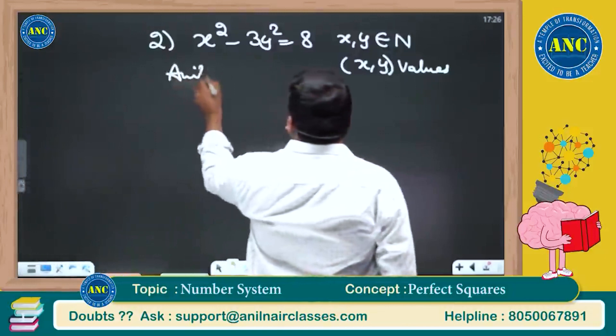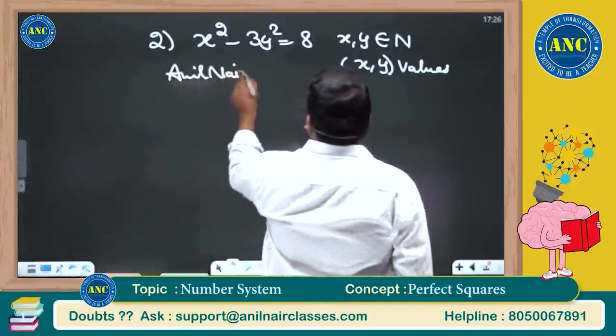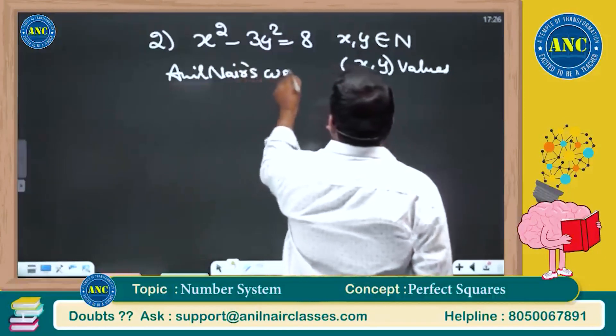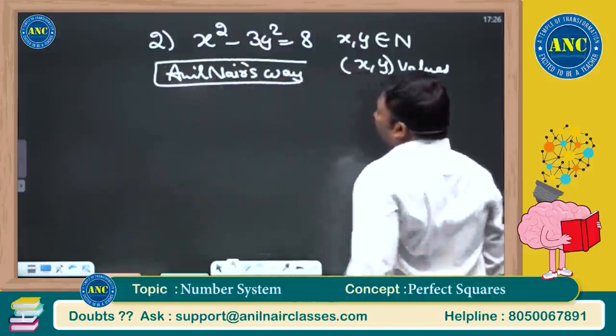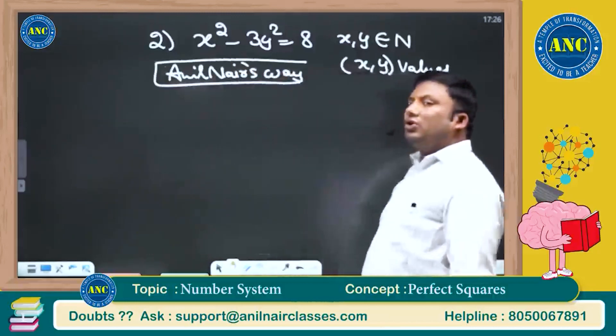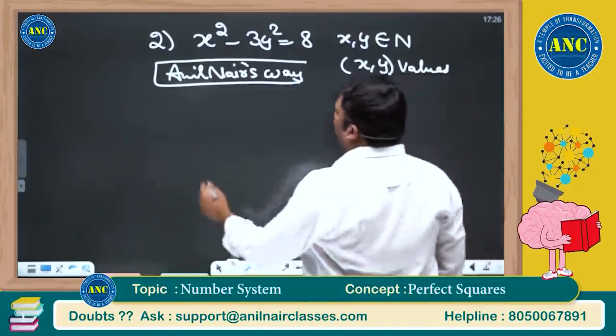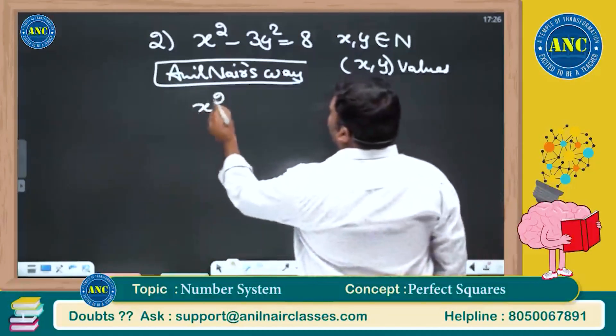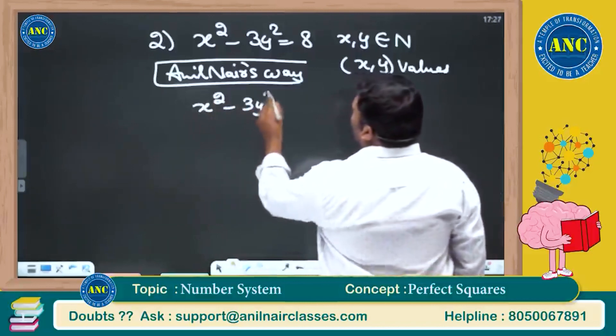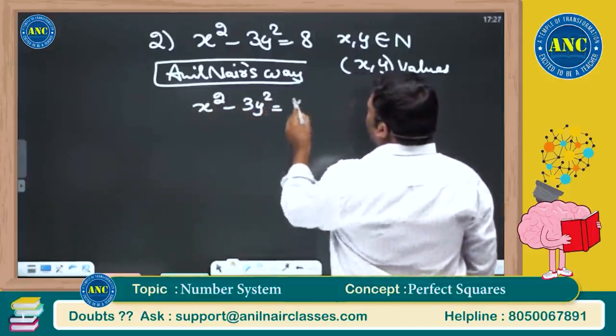Anil Nair's way of solving: for me this question is a less than 5 seconds problem. I have seen some teachers solving it in 5 to 10 steps and saying that it's a difficult question. Please don't solve this question x square minus 3y square equivalent to 8.